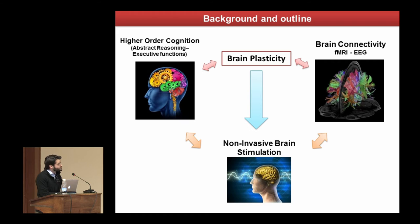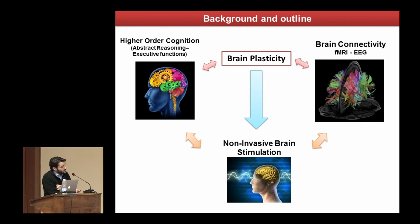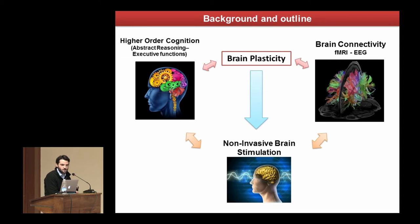This is the outline of my talk. There are three main components. When we talk about the neuroscience of intelligence you can start with the basic knowledge about what intelligence is, but I will skip this part and work on the other two components. One is the study of brain connectivity at both the neurophysiological and neuroimaging level using functional MRI, electroencephalography, or magnetoencephalography. The other approach is non-invasive brain stimulation.